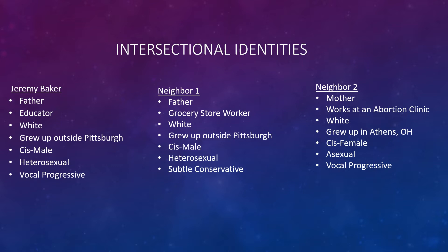My other neighbor is a mother. She works at an abortion clinic. She is white. She grew up in Athens, Ohio. She is cisgender female. Sexually, she is asexual, and she is a vocal progressive. Politically and philosophically, I have a whole lot more in common with neighbor number two. However, lived experience-wise and culturally, I have more in common with neighbor number one because we grew up in very similar places and share some similar intersectional identities.